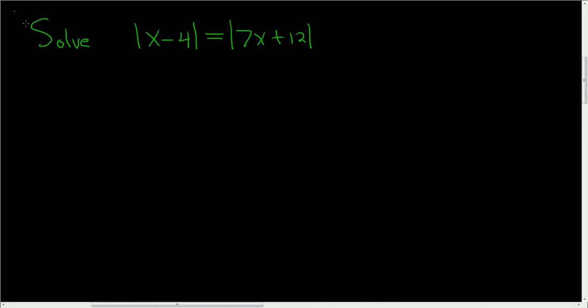We have an equation with two absolute values. Let's go ahead and solve it. So to solve this, we can just drop the absolute values as follows. We'll take x minus 4 and we'll set it equal to 7x plus 12, or x minus 4 is equal to the opposite of 7x plus 12.